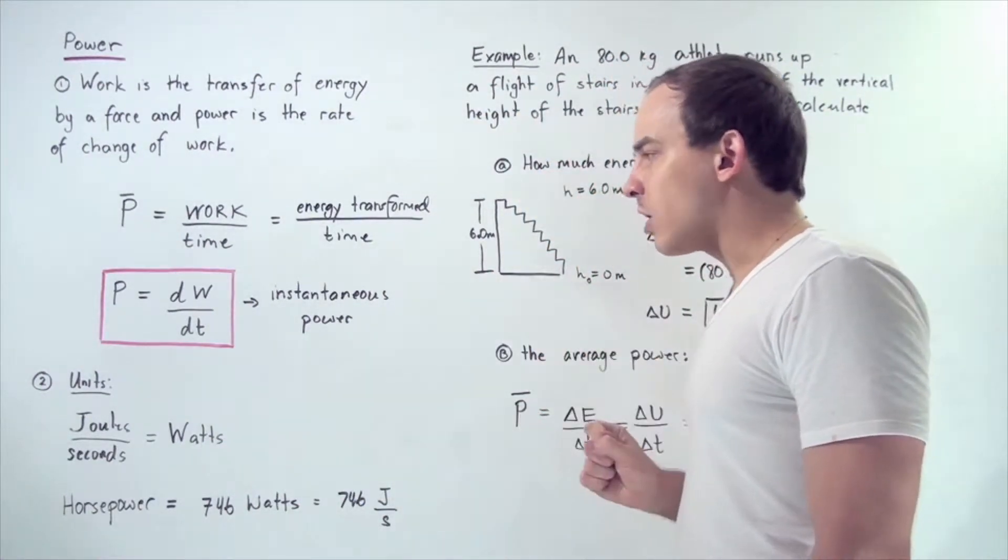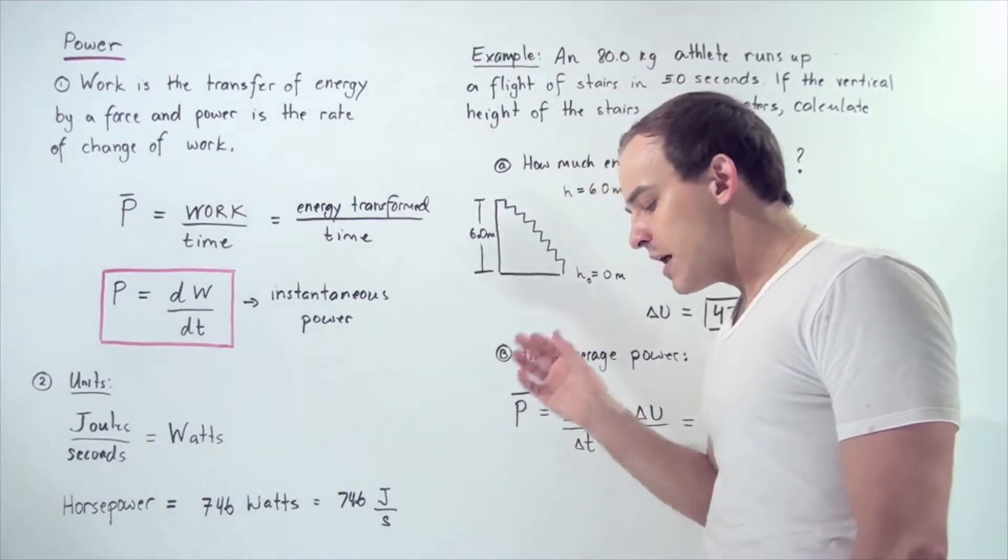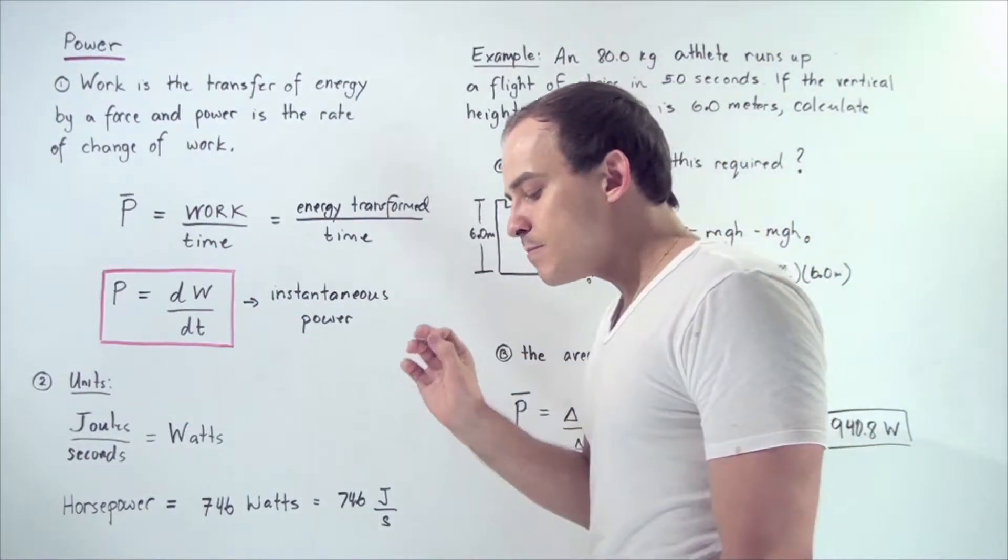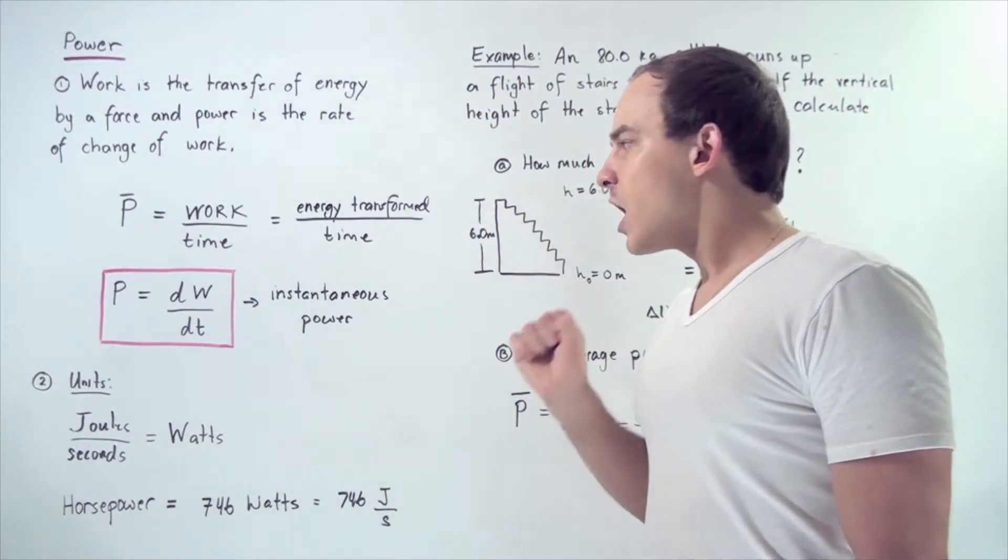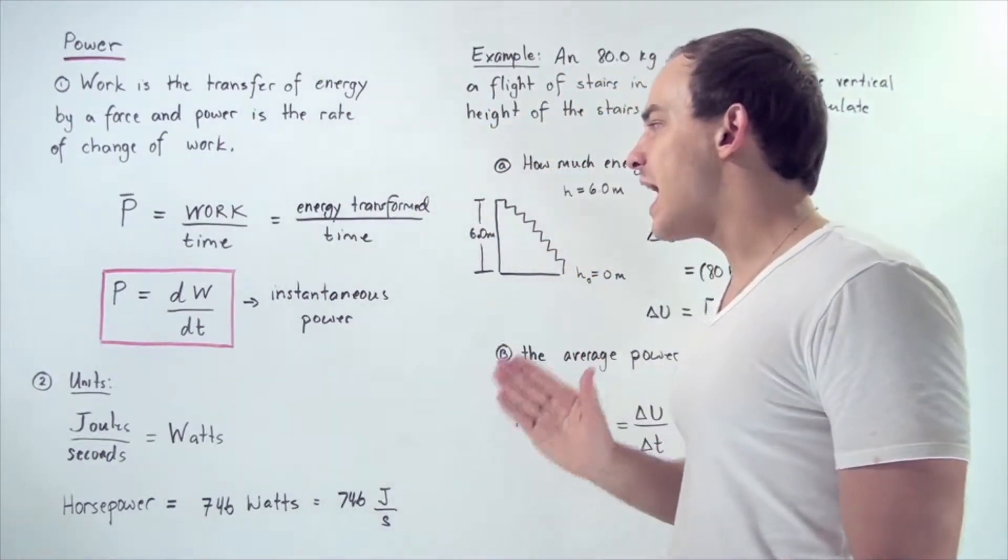Instantaneous power has the following formula: to find the instantaneous power at any given moment, we have to take the derivative of our work function with respect to time.